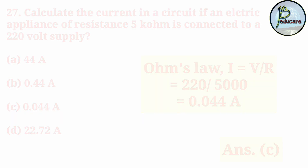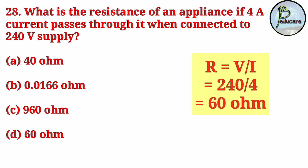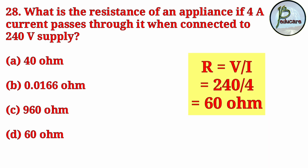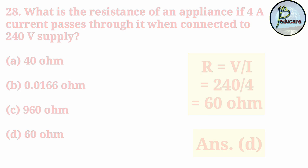Next question: What is the resistance of an appliance if 4 ampere current passes through it when connected to a 240 volt supply? Applying Ohm's Law: R = V/I = 240/4 = 60. The correct option is answer D, 60 ohm.